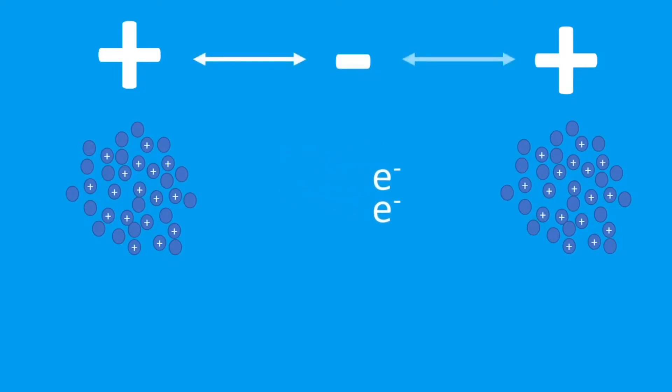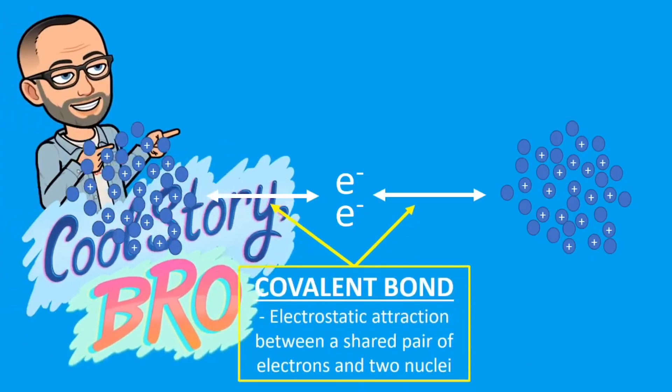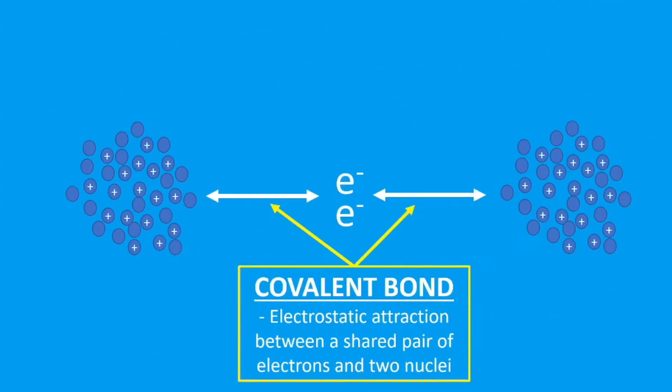However, if we put a pair of electrons between the two nuclei, those electrons are attracted to both nuclei, and the nuclei are attracted to the electrons. So there's a mutual attraction here between the shared pair of electrons and the two nuclei, and that's the covalent bond. It's the electrostatic attraction between the shared pair of electrons and two nuclei.